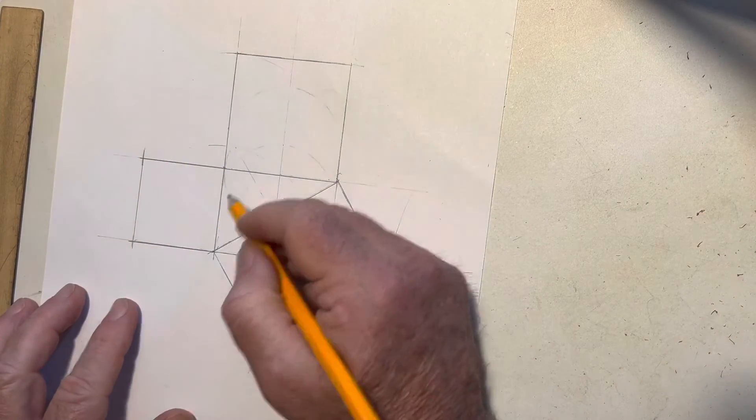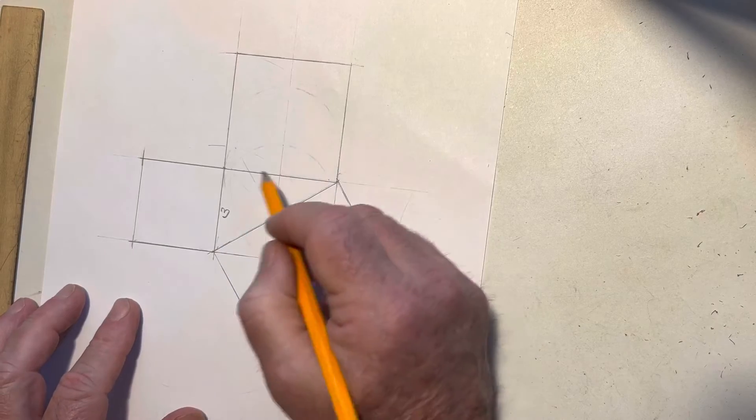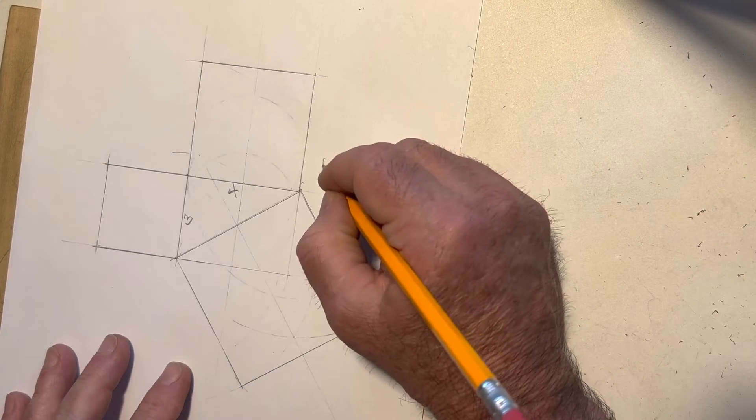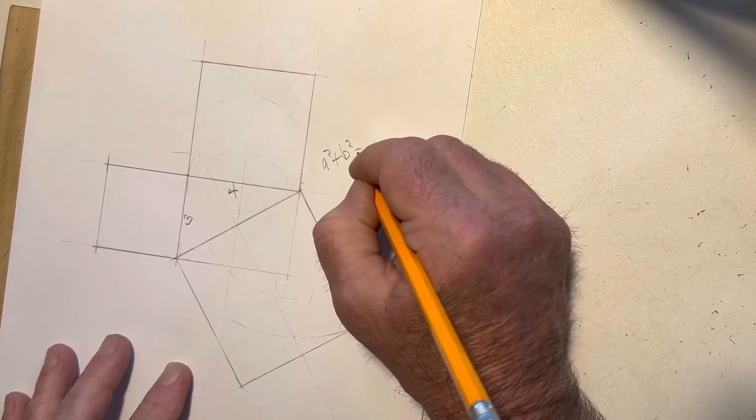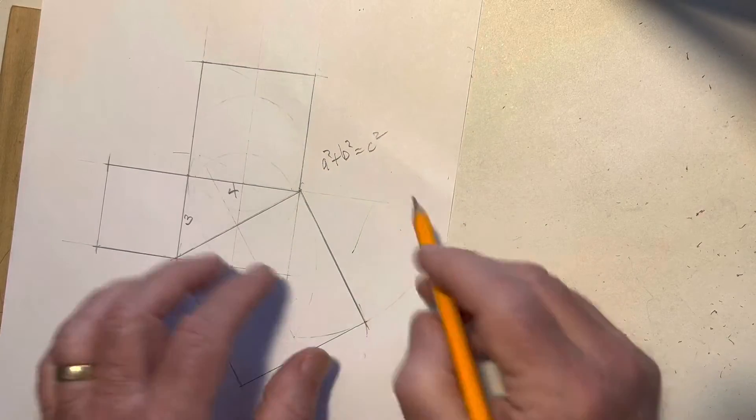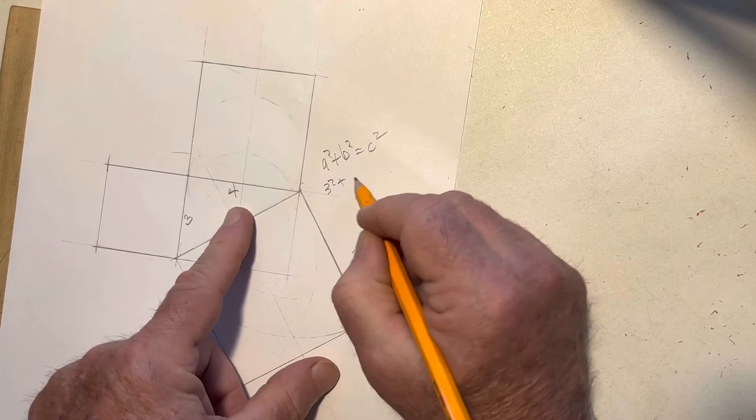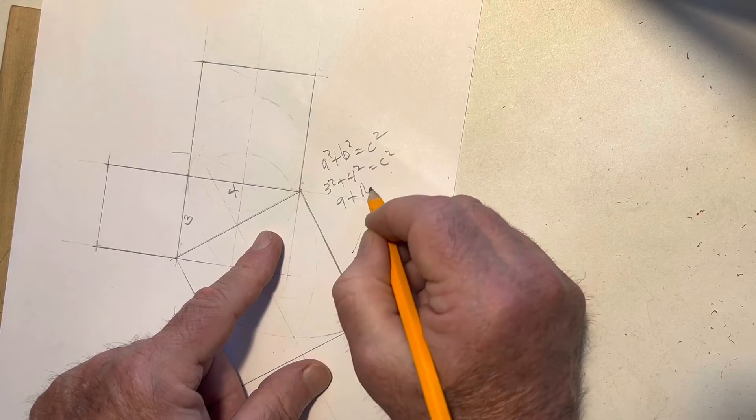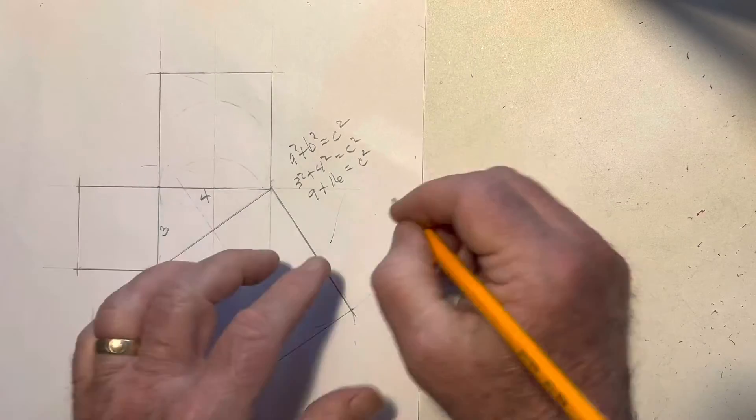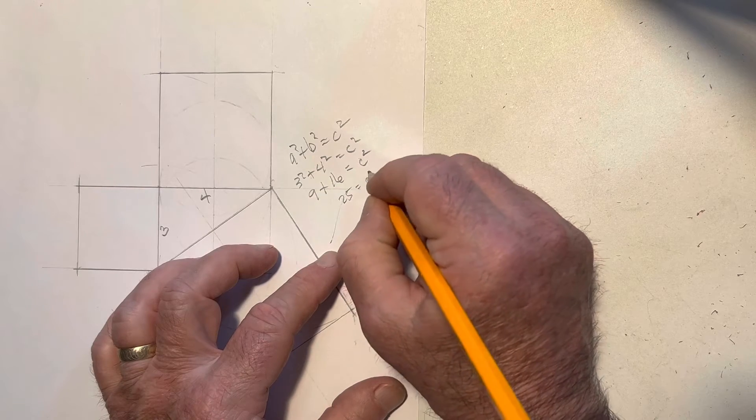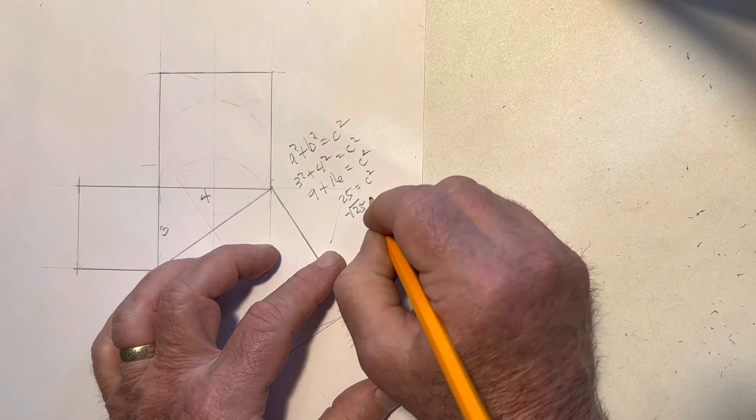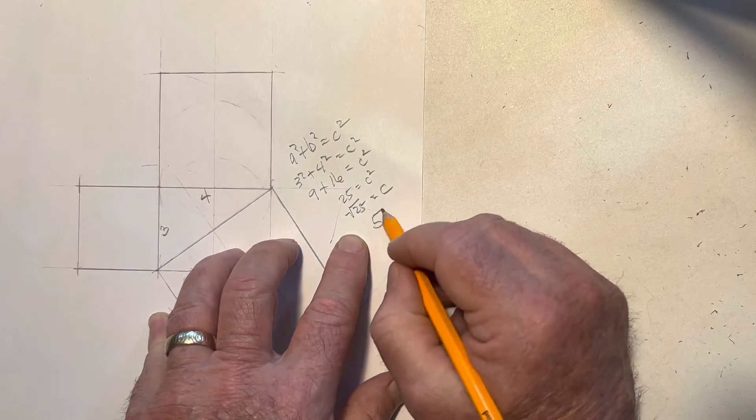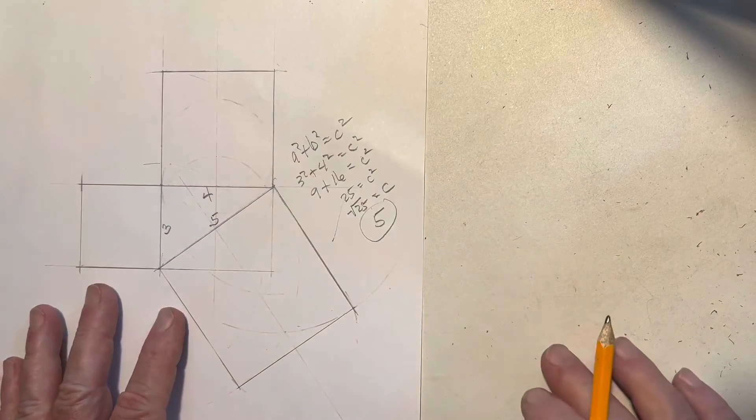What this is, is a distance of 3. This is 4. And this should be 5. So if we look at our Pythagorean theorem, we've got A squared plus B squared equals C squared. So we've got 3 squared plus 4 squared equals C squared. That's 9 plus 16 equals C squared. So we've got 25 equals C squared, which means the square root of 25 equals C. And the square root of 25 is 5. So this is 5.